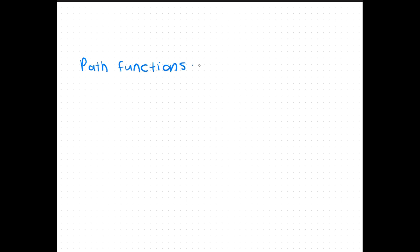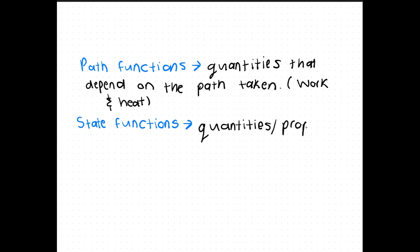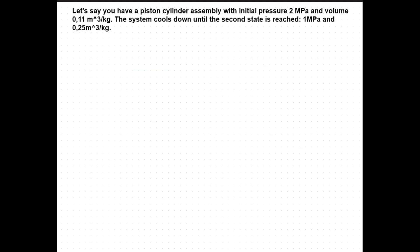Another important detail when doing calculations with your system is path and state functions. Path functions are quantities that depend on the path taken like work and heat. State functions are properties that depend on the state only like temperature and pressure. This concept can help simplify our processes significantly and here's how.